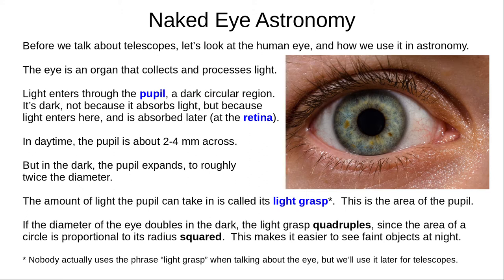In daytime the pupil is about two to four millimeters across, limiting the light it collects to protect the retina from being overloaded. But in the dark it expands to about twice that size to make the most of the limited light available. The amount of light the pupil takes in is called its light grasp, and is more or less the area of the pupil. The area of a circle is proportional to its radius squared, so doubling the width of the pupil lets it take in four times as much light, making it easier to see faint objects like stars at night.